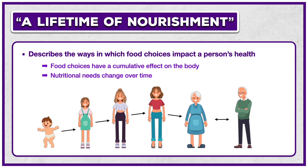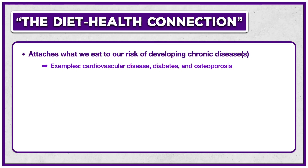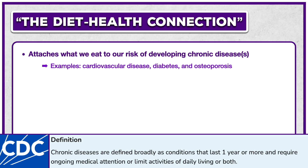Though not depicted here, it's worth noting that nutritional needs vary by sex as well, meaning males and females have slight differences even if they're the same age, which we'll see more clearly in Chapter 2. The second item, the diet-health connection, attaches what we eat to our risk of developing one or more chronic diseases. The CDC defines these diseases as conditions that last one year or more and require ongoing medical attention or limit activities of daily living or both. Examples include cardiovascular disease, diabetes, and osteoporosis.